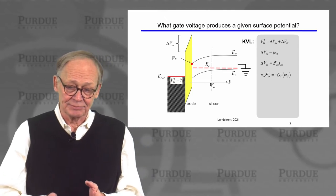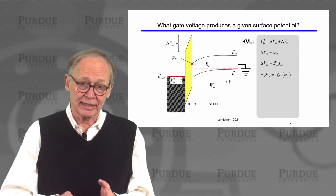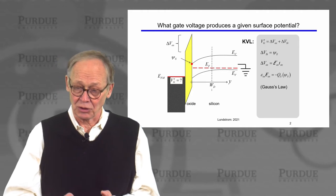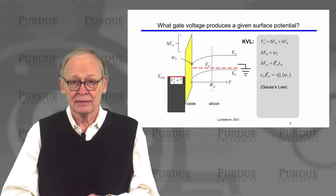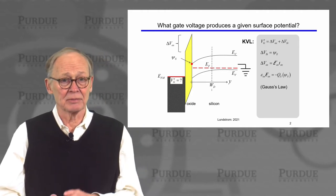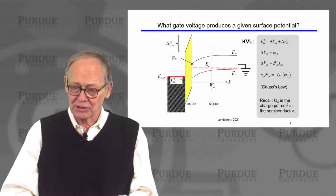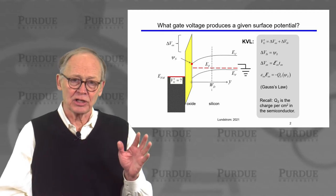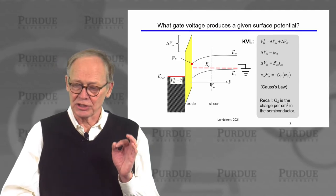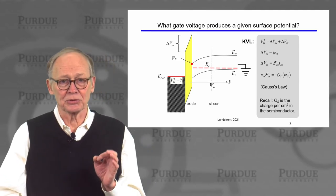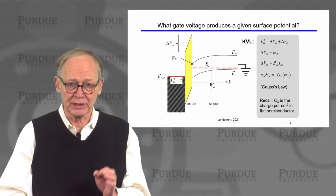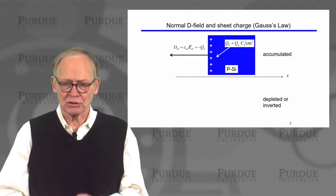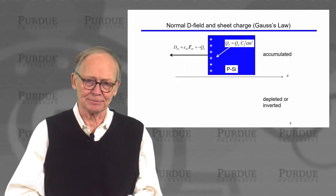We can relate the electric field in the oxide to the charge in the semiconductor through Gauss's law. This charge, Qs, is the charge in coulombs per square centimeter in the semiconductor.